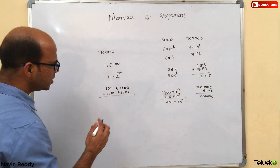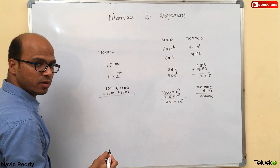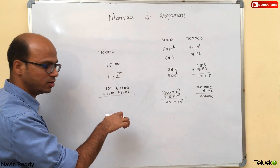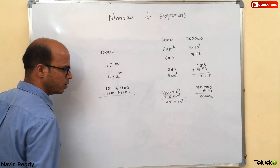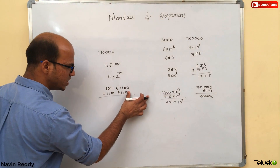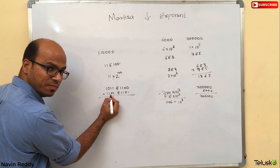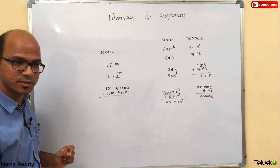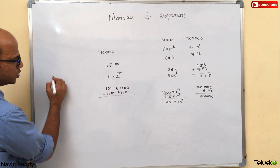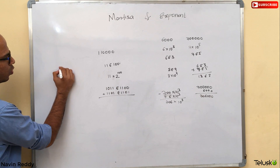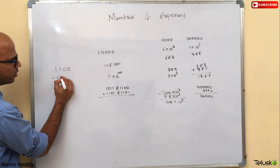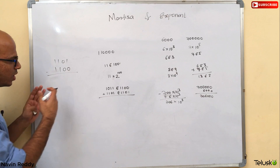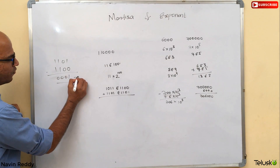To make the exponents the same, we first find the difference between them. So 1101 minus 1100 gives 0001, which is 1 in decimal. So the difference is 1. Changing the exponent will affect the Mantissa accordingly by that many bit shifts.